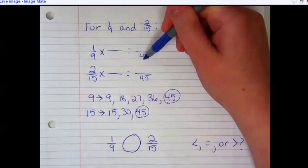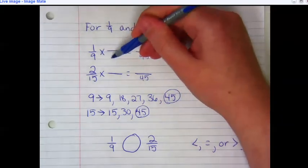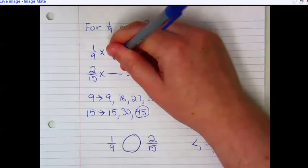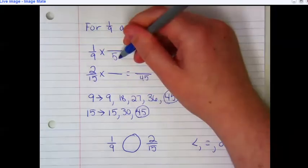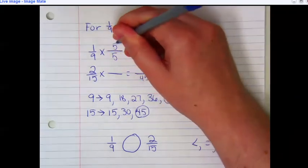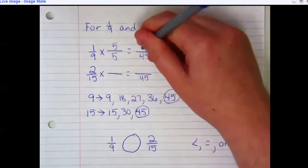So 45 is going to be my least common denominator. So let's think about 1/9 first. 9 times what is 45? Well, 9 times 5, what I do to the bottom, I have to do to the top. 1 times 5 is 5.